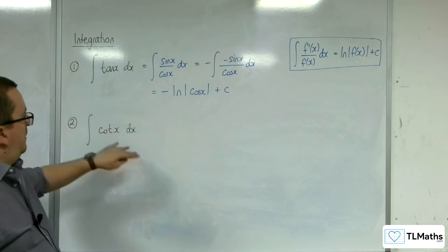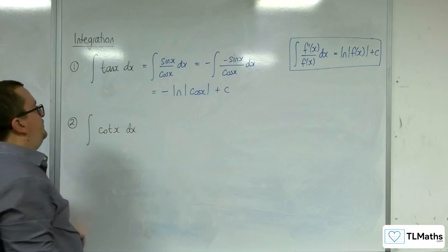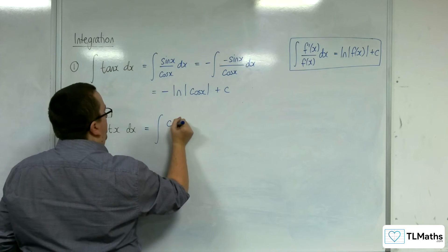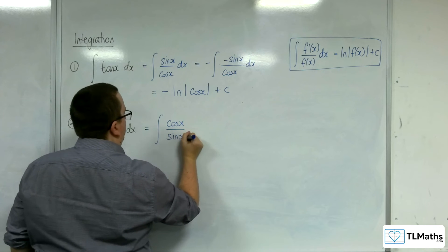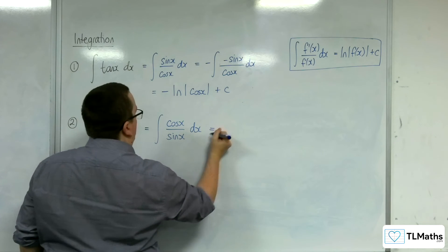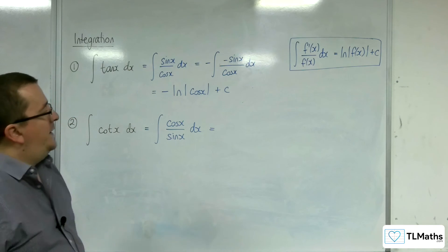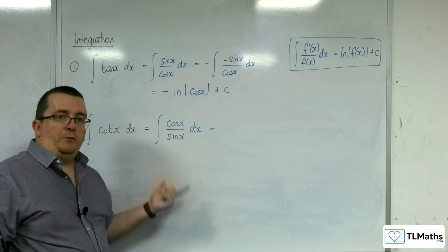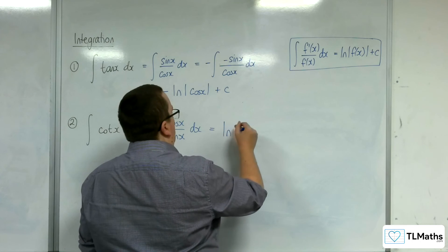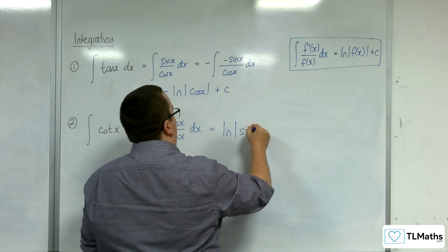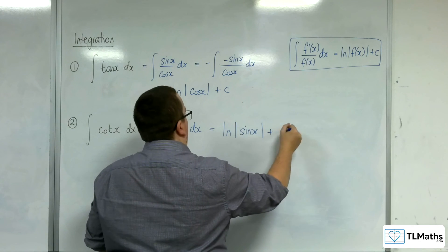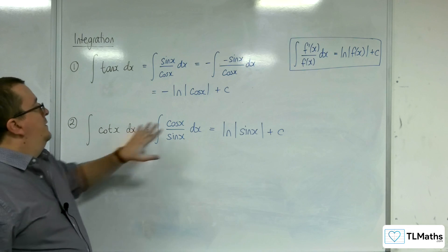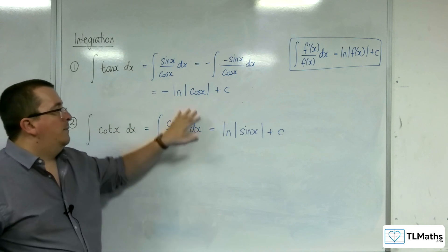Now we're going to use a similar trick for cot x. So cot we understand is cosine over sine. Now we don't need to pull any fancy tricks here, because sine x differentiates to cosine x perfectly. And so this is the natural logarithm of the modulus of sine x plus some constant c. And so that is where these integrals come from.